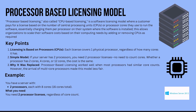Key points of processor-based licensing: licensing is based on processors or CPUs. Each license covers one physical processor regardless of how many cores it has. It's a simple model — if your server has two processors, you need two processor licenses. No need to count cores; whether a processor has two cores, four cores, or 12 cores, the cost is the same.